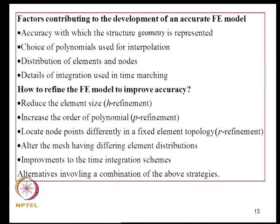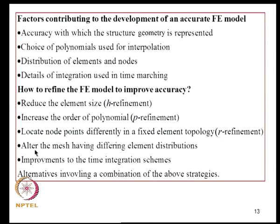To improve FE model accuracy, one can reduce element size so the domain is covered with more elements, increasing degrees of freedom — this is called H-refinement, where H refers to element size. Alternatively, retain the same elements but increase polynomial order — called P-refinement. Locating node points differently within a fixed topology is R-refinement. One can also alter mesh distributions or improve time integration schemes, or use combinations of these strategies.